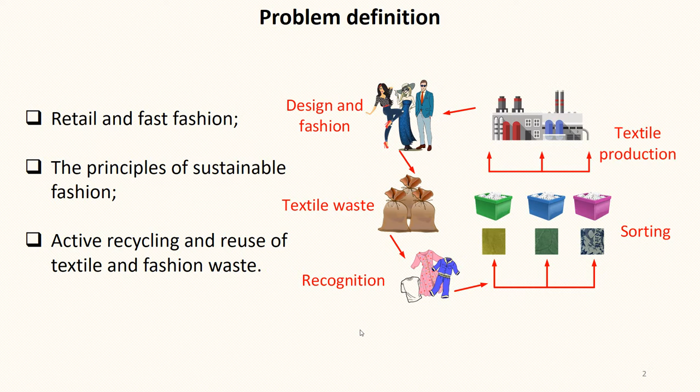The principle of reuse is presented in a schematic form in the figure. The produced textiles are used in design and fashion. Once disposed of by consumers, textile waste is identified by an appropriate automated system and sorted. Sorted textile materials are returned for recycling in textile production. The cycle repeats.